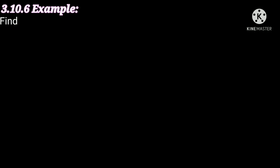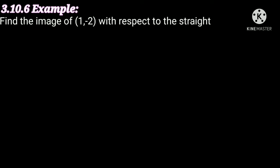The straight line 3.10.6 example: find the image of (1, -2) with respect to the straight line 2x minus 3y plus 5 equal to 0. This is our given problem. In this problem we have to find the image of the given point with respect to the line by using theorem 3.10.5. Now we will solve the problem.